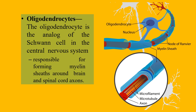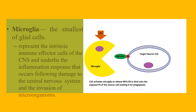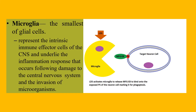The other type of cells are the microglia — they are the smallest of all glial cells. They represent the intrinsic immune effector cells of the CNS, and underlie the inflammation response that occurs following damage to the central nervous system and the invasion of microorganisms.